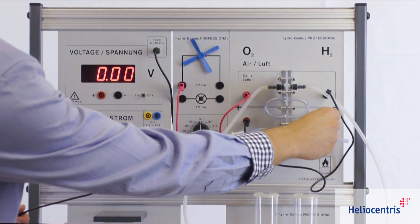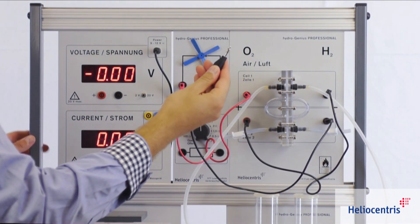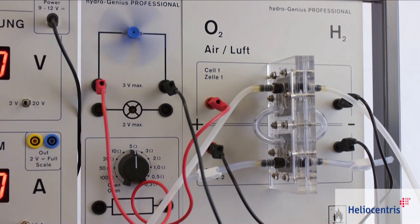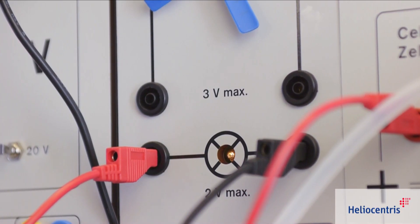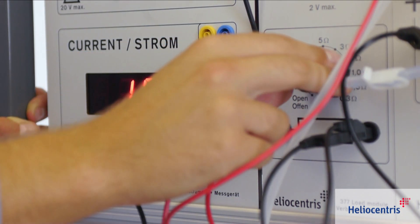The generated electricity can be fed into the load module which is used to simulate specific loads to the fuel cell and solar panel, for example a motor, a lamp, or ten selectable resistors.